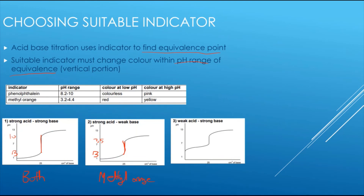For a weak acid and strong base titration, the bottom of the vertical section is just below pH 7 and the top is just above pH 10. Methyl orange changes colour far too low in pH, so it is crossed out immediately. Phenolphthalein changes colour between approximately pH 8.2 and 10, which fits within this vertical section, so phenolphthalein is the correct indicator here.